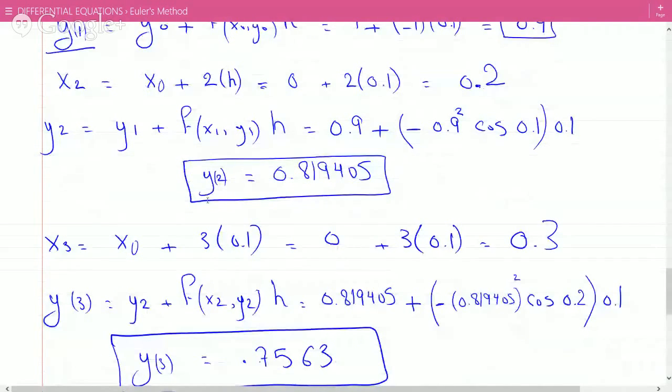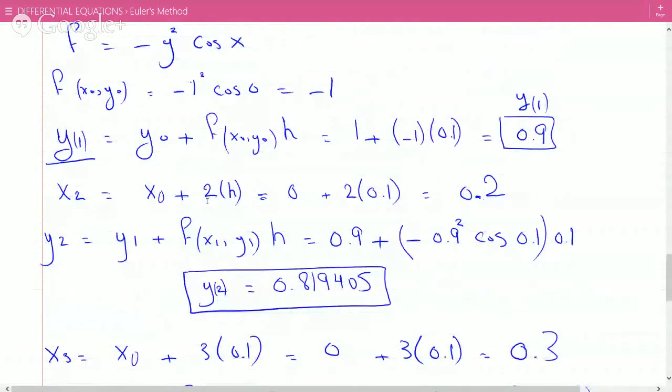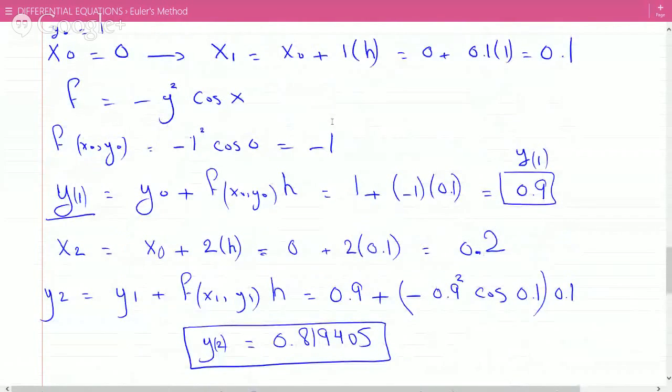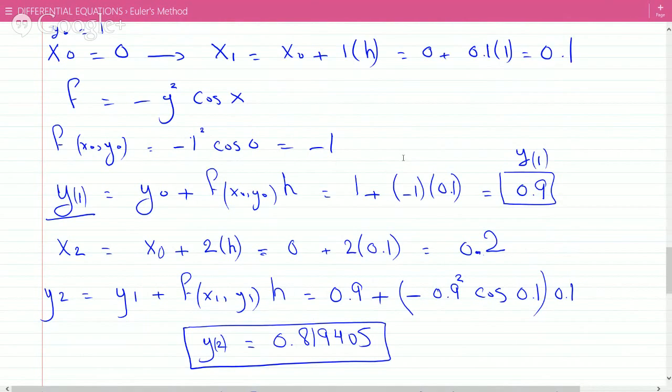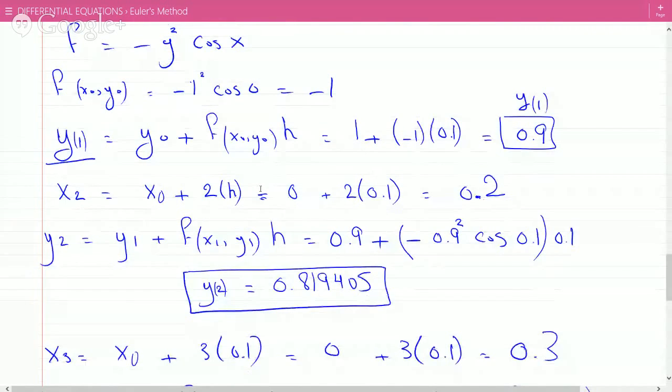So we're at y2 = 0.819405. Student: I got y'(0) to be negative. Instructor: Yes, y'(0) is -1. You plug it here and get 1 - 0.1 = 0.9. y0 is 1, f(x0, y0) = -1 times the step size 0.1. You're adding the step size times the derivative to the actual equation.